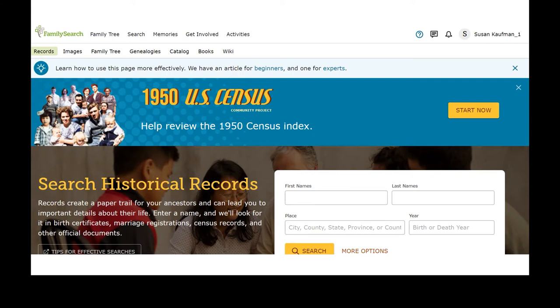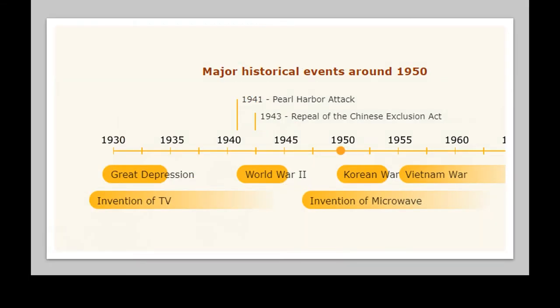When you go to FamilySearch, there's a big banner across the top that says 1950 Census. Click on that and down on the page there are historical events surrounding 1950. You can look at this and begin to weave the story. Was your individual in the 1950 census in World War II? Was the individual part of maybe the Korean War or the Vietnam War? The invention of the microwave happened in 1950. You can go to Google, put in events in 1950, and find things to help weave your family story.